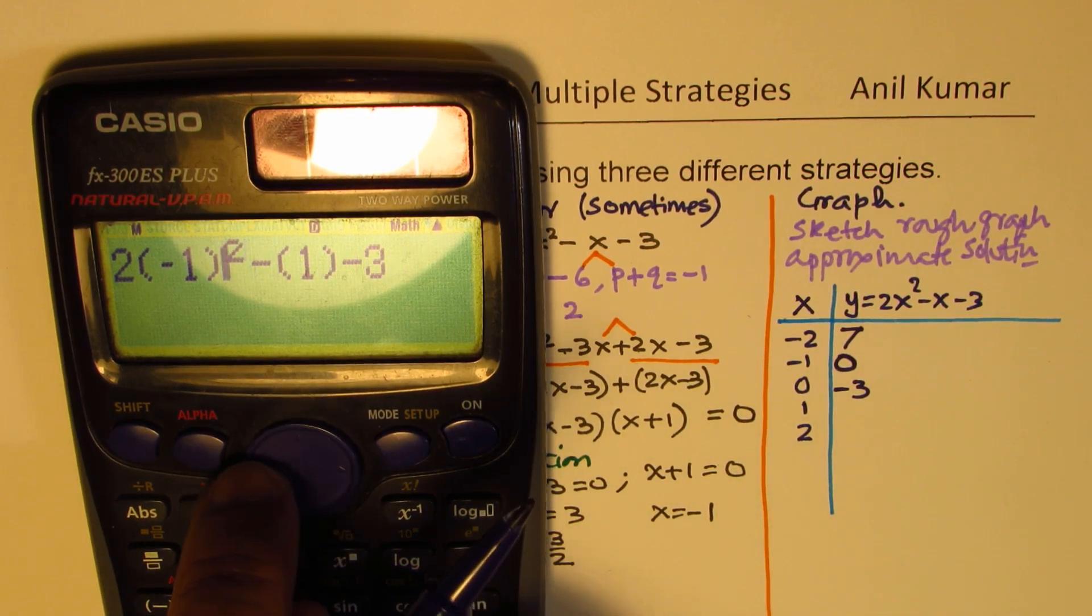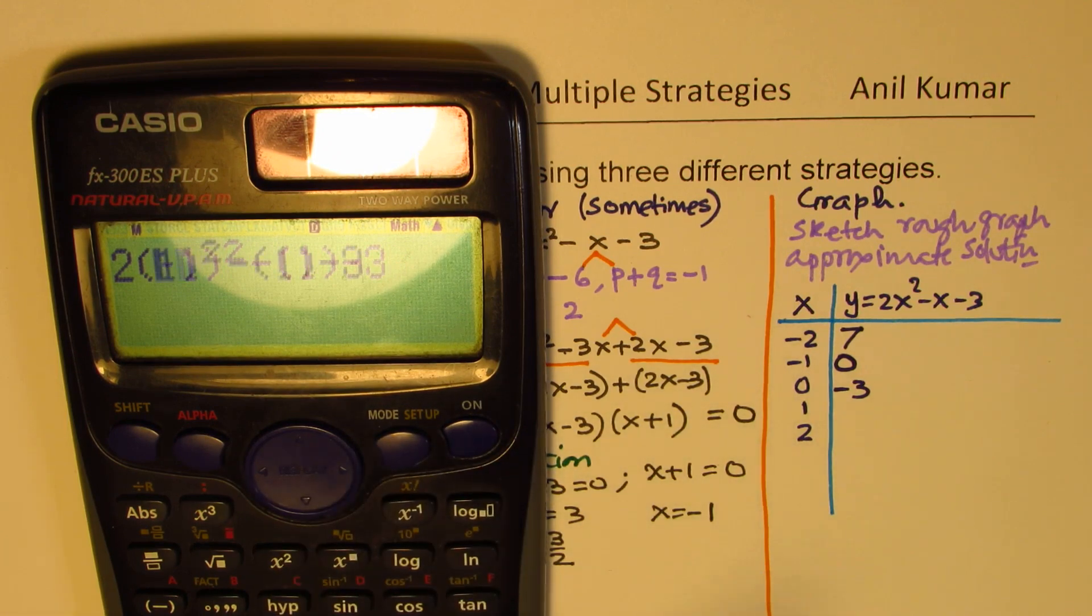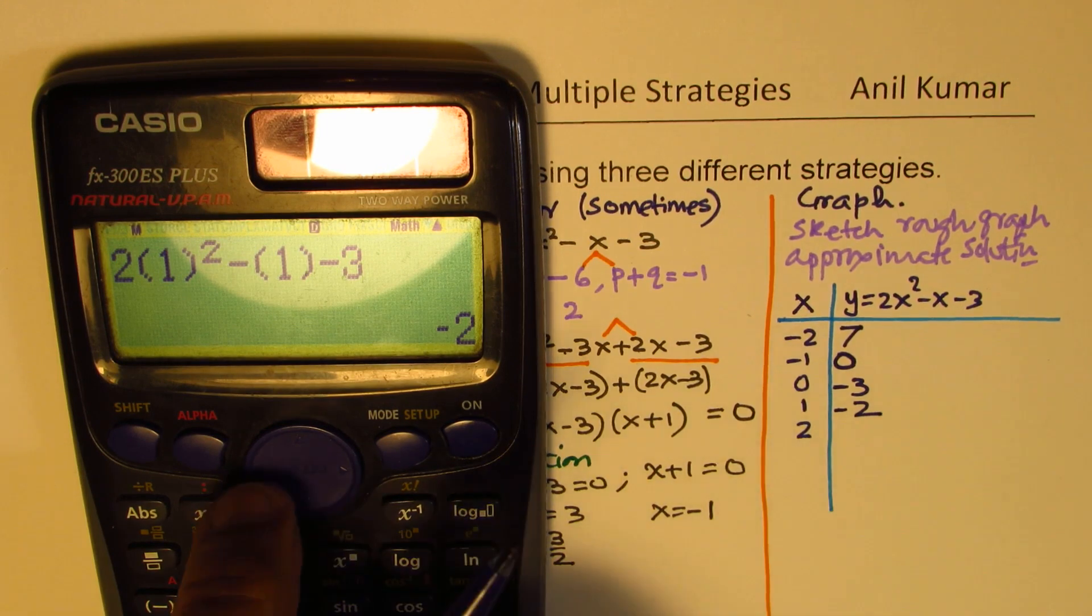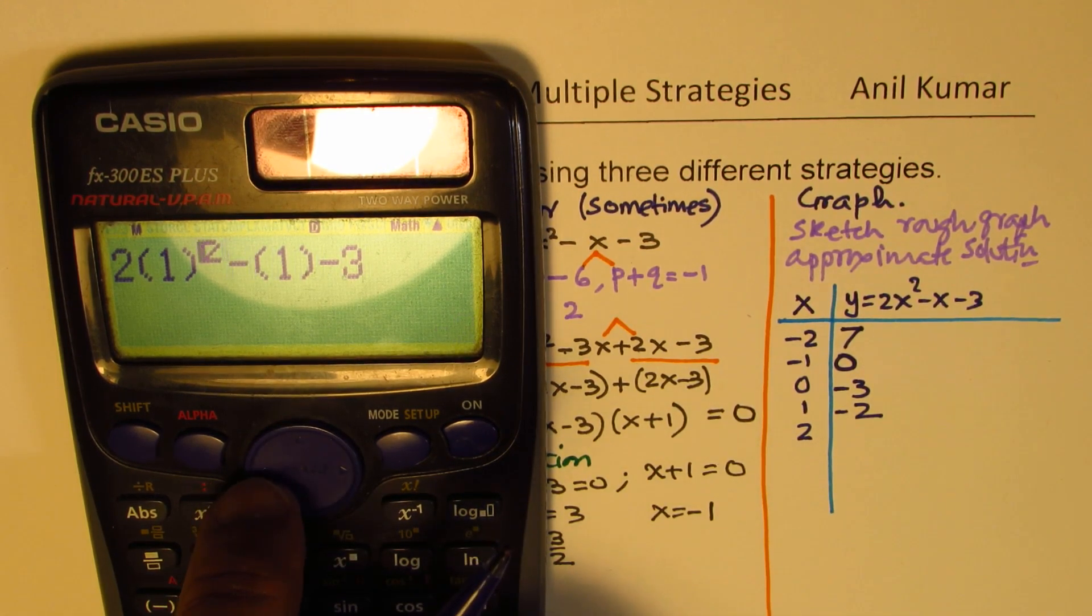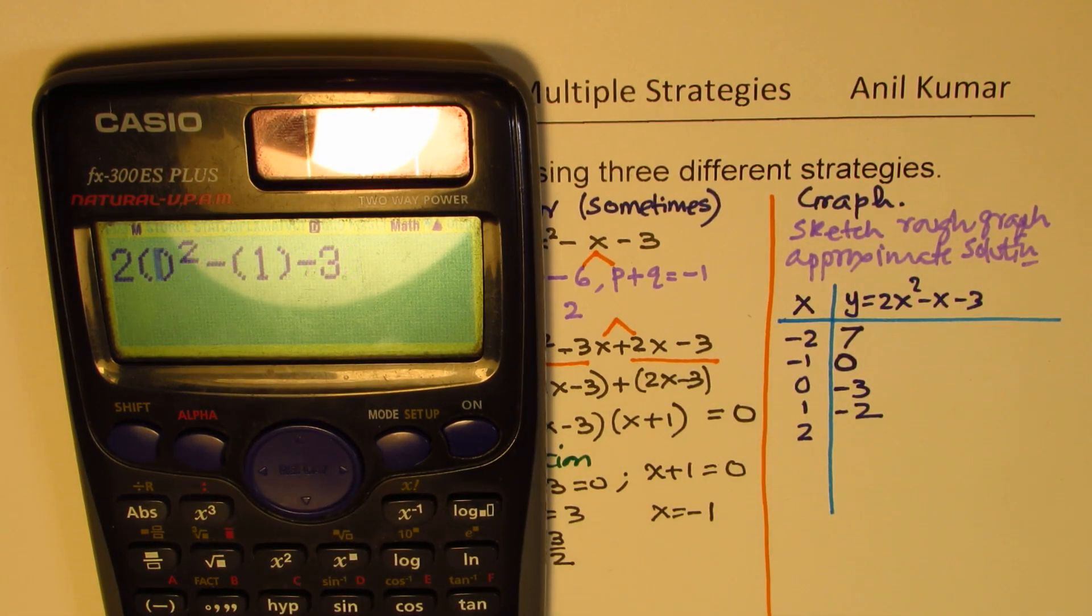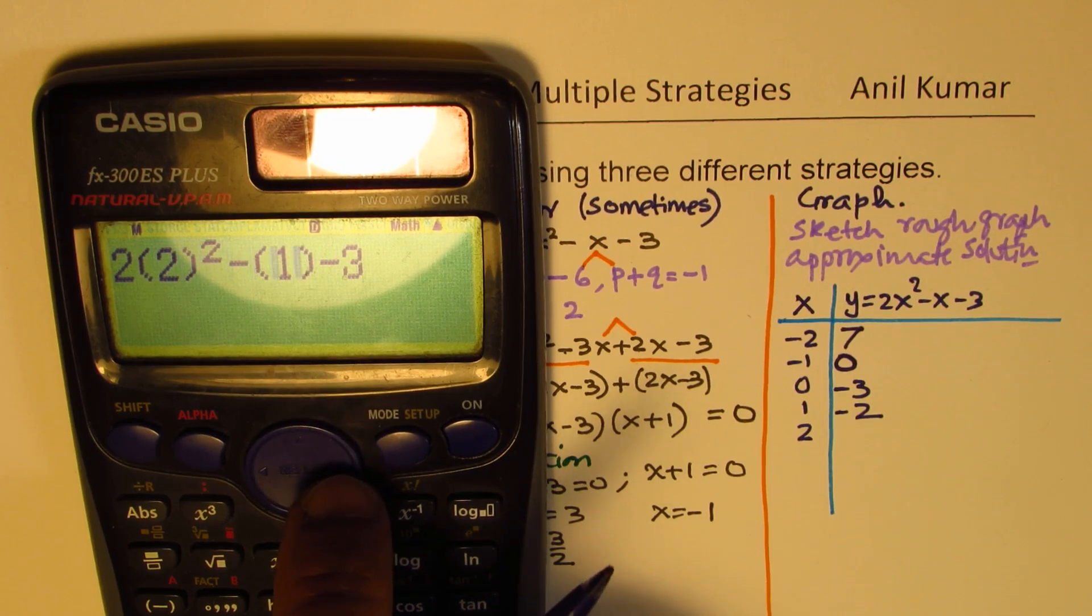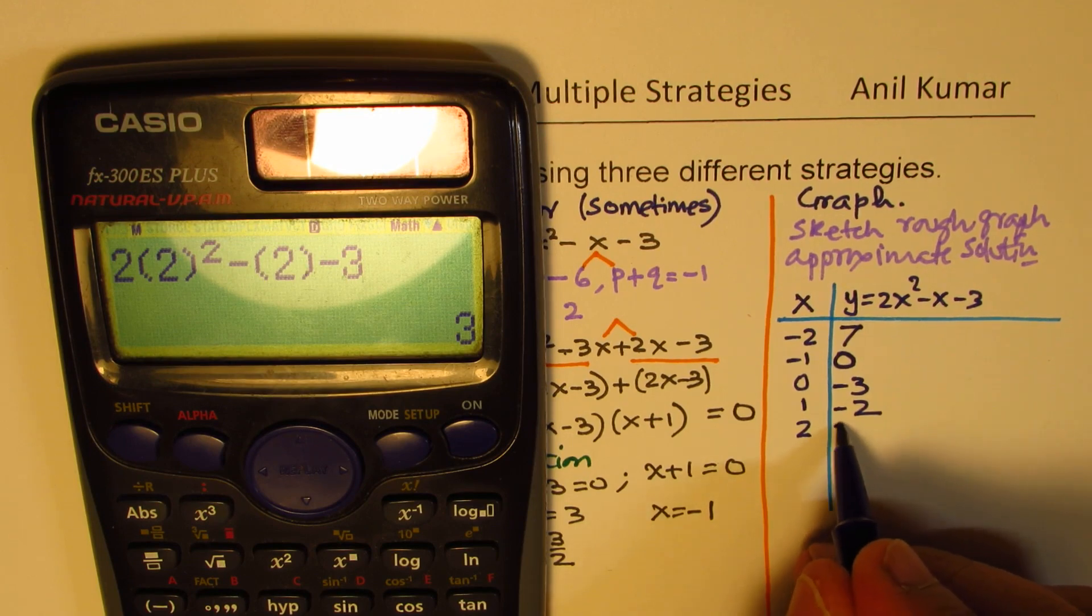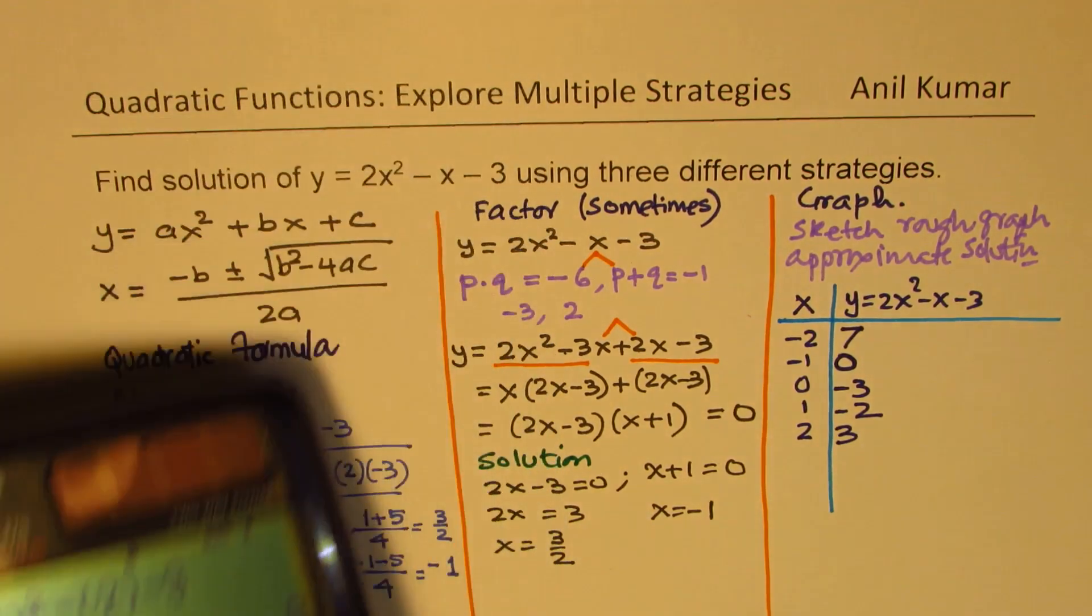So now we get our answer as minus 2, and let's change it to 2. And we get 3 as our answer.